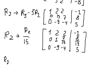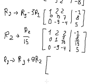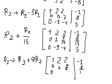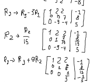Now for row number three, we will use row number three plus nine times row number two — not row number one — to cancel the negative nine. After calculation we have one over five, and this one gives negative one over five.